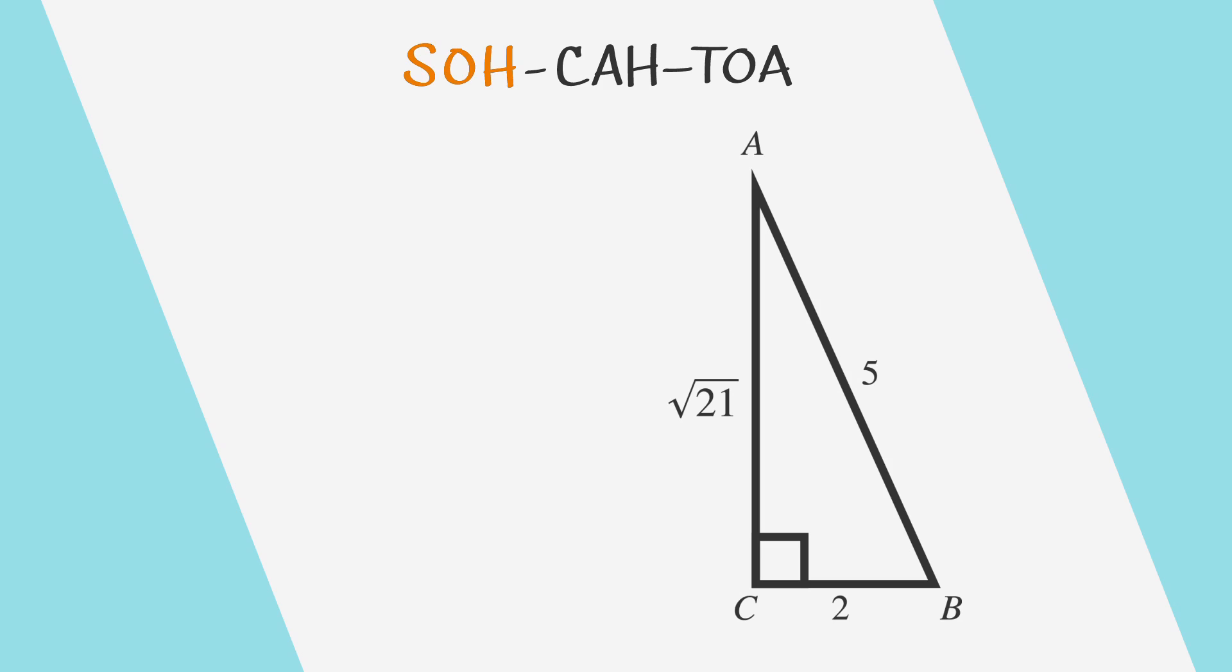Let's use this acronym to write equations for the sine, cosine, and tangent of a given triangle. Starting with SOH, the sine of A equals the opposite over the hypotenuse. In this right triangle, the measure of the side opposite A is 2, and the hypotenuse, the side opposite the right angle, is 5. So the sine of A would be 2 fifths.